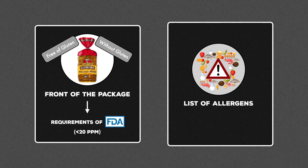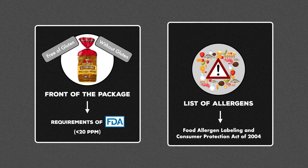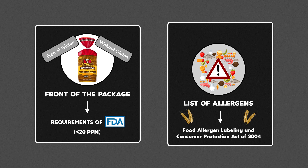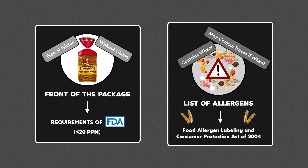The second place to look is the list of allergens on the food label. With the passing of the Food Allergen Labeling and Consumer Protection Act of 2004, foods sold in the United States are required to list major allergens. This includes wheat, but not barley, rye, or triticale, so while it's useful, it doesn't ensure that the product is gluten-free. Warnings for wheat often appear as an allergen statement, or it will say in bold near the nutrition facts panel that the product contains wheat or may contain traces of wheat.